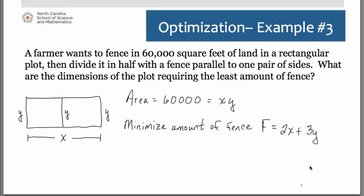Thinking again of the steps we go through to solve an optimization problem, this would be our primary equation. This f equals 2x plus 3y. Of course the problem is it's in terms of two different variables, which we cannot have. So we need to go back to that other equation we wrote, our secondary equation that models the area, and solve for either x or y.